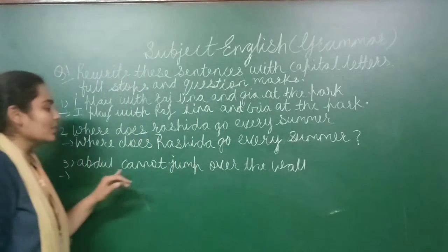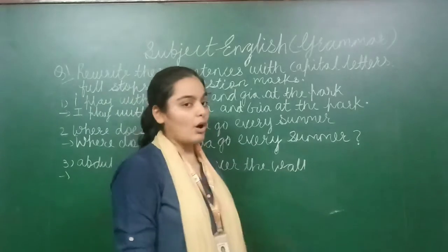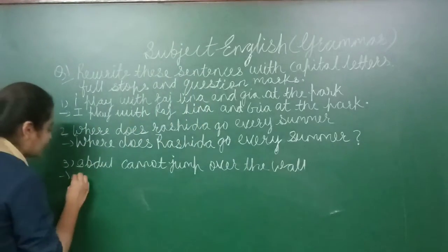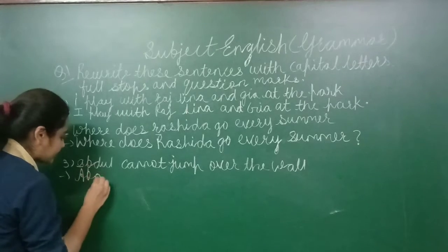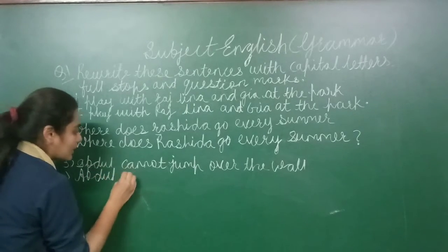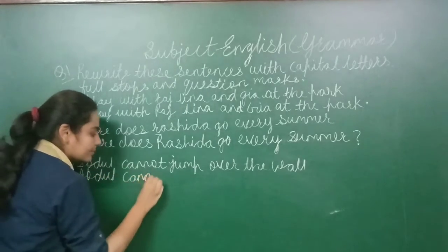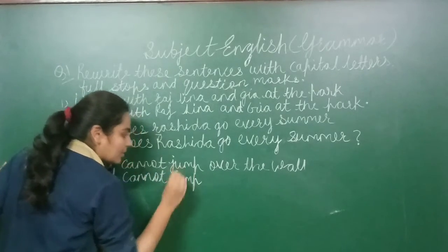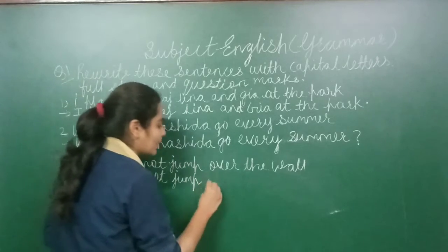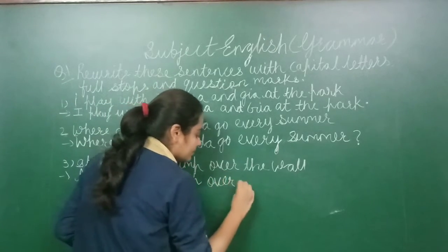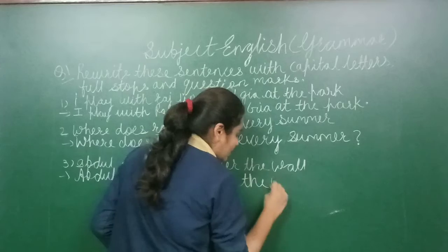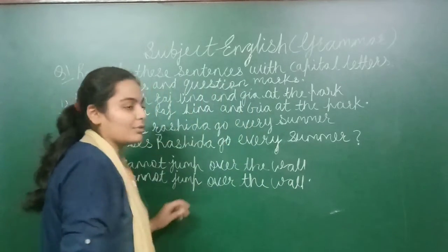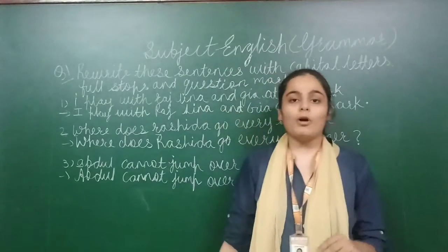Example three: 'Abdul cannot jump over the wall.' The first letter A is written in capital. This is a normal sentence, so after completion of the sentence we put a full stop only.